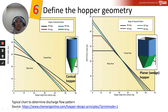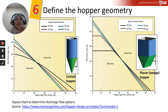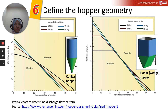From the previous lecture, we stopped at Step 5 of the 10 steps for effective silo design, taken from an article written by Eric Mainet from AJ Naiki and Johansson's company. Now we look at Step 6: to define the hopper geometry based on the chosen flow pattern.